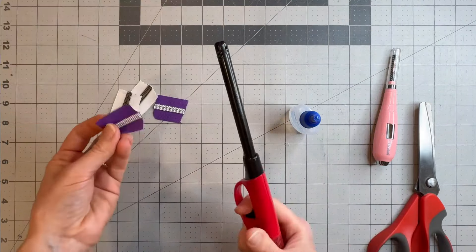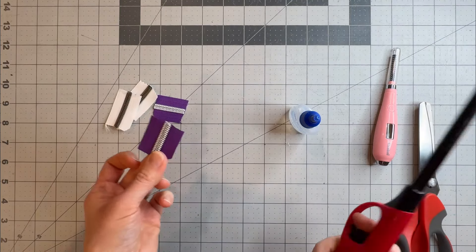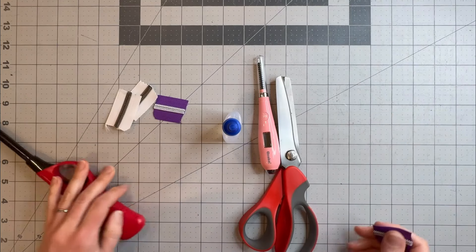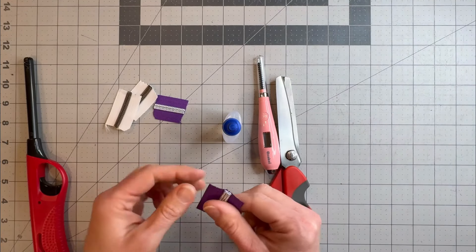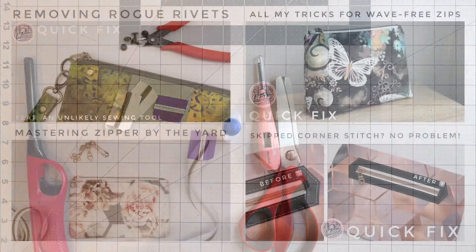So if this option using the lighter, which I like because it's so fast to just melt the ends, is not for you, you do have a couple of other options for neatening up and securing the ends of your zipper so that they don't fray. Hope that helps, thanks everyone!